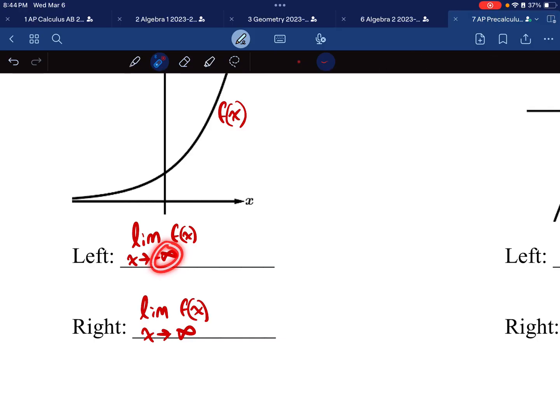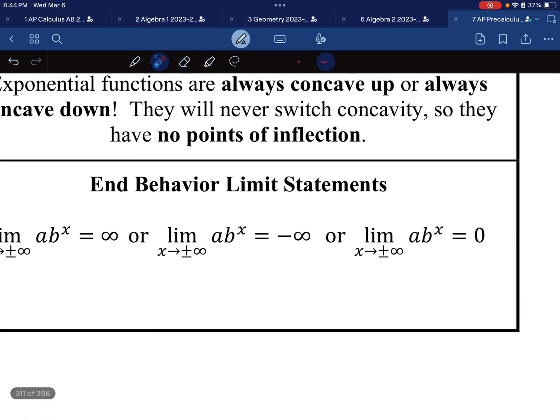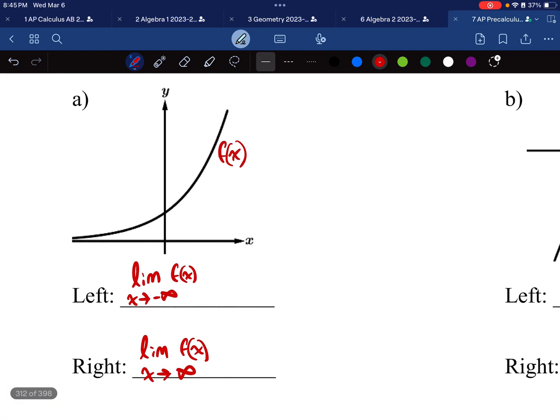So as I go to the left, what happens? We have three choices. It's either 0, positive infinity, or negative infinity. Another way of interpreting that is it either goes up forever, it goes down forever, or it goes to the x-axis. So as I move left, I'm getting closer and closer to this x-axis, therefore I'm getting closer to the height of 0. As I go to the right, I'm moving farther and farther away in the positive direction, so this is a positive infinity.